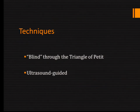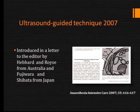The techniques are basically two. There is one — now we call blind — which is the one proposed to be done through the triangle of Petit. And then we have the ultrasound-guided techniques. I will start with the ultrasound-guided because it's easier to go through. The ultrasound-guided technique was just recently described in 2007 by Herbert and others, and it was introduced in a letter to the editor. Most of the history of the development of the TAP block has been letters to the editors.